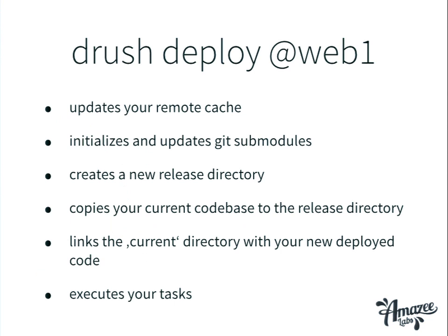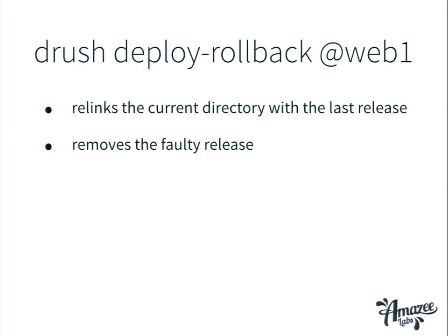What exactly happens when we run drush deploy at web1? It goes to every web server, updates your remote cache (the shared directory), initializes and updates submodules, and trashes everything that's not as described in Git so you're sure you have the right versions. It creates a new release directory, copies over your codebase, links the current directory to the deployed code, and executes the tasks we define. If something goes wrong, you can run drush deploy rollback and it will switch the symlink back to the latest release.